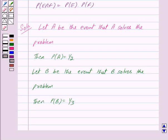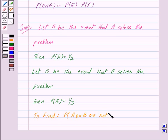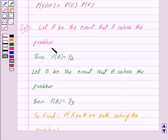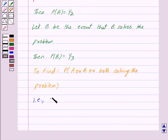Now since A and B are solving the specific problem independently, the probability that the problem is solved is given by the probability that A solves the problem or B solves the problem or both solve the problem. So we have to find Probability of A union B.